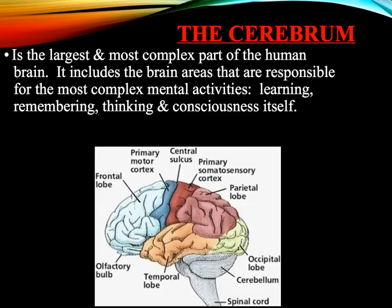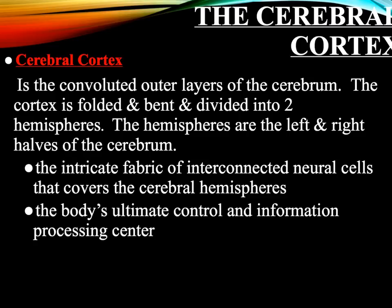Next, we will discuss the cerebrum — the portion of the brain most of us are familiar with. It's the largest and most complex part of the human brain, responsible for the most complex mental activities such as learning, remembering, thinking, and consciousness itself. The most significant part of the cerebrum is the cerebral cortex — the convoluted outer layer that wraps around the cerebrum. The cortex itself is folded and bent and divided into two hemispheres, left and right. It's the body's ultimate control and information processing center.